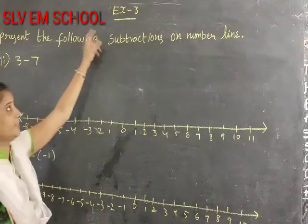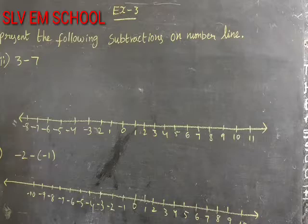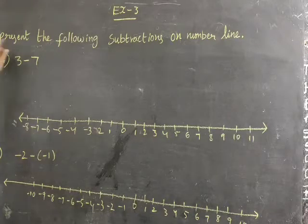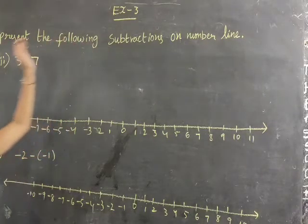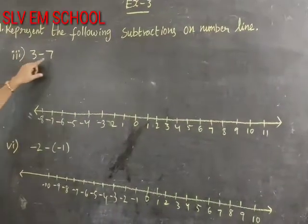Now going to Exercise 3. Total we have 3 problems. In first problem, represent the following subtraction on the number line. The third one is 3 minus 7.